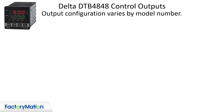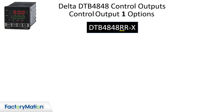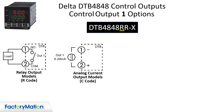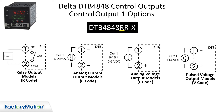Output configuration varies by model number. The first alpha character in the part number designates output 1. Output 1 can be a relay, analog current, analog voltage, or a 14-volt DC pulse output to drive a solid state relay.